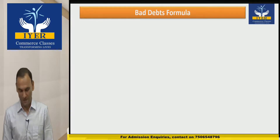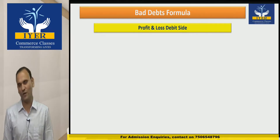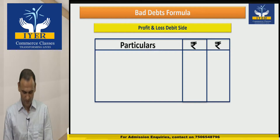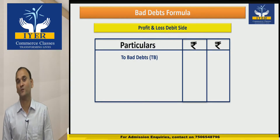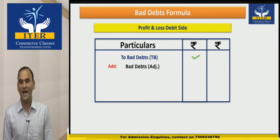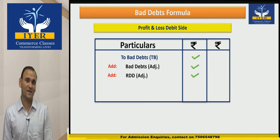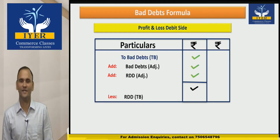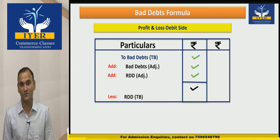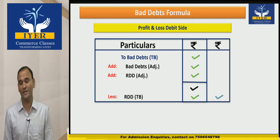Now we are going to have a look at the Bad Debts Formula. The Bad Debts formula will appear on the Profit and Loss debit side. The formula will start with Bad Debts as per Trial Balance, add Bad Debts as per adjustment, add RDD as per adjustment, and less RDD as per Trial Balance. This is how we derive the final amount of bad debts to appear in the Profit and Loss Account.